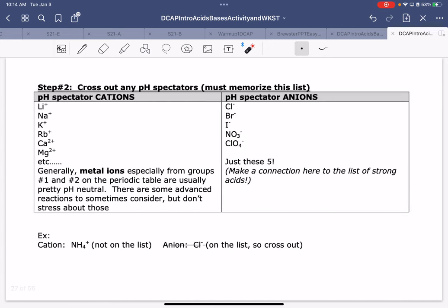Then, step two, I've got to cross out any pH spectators. You are expected to memorize this list. Here's my list of my cations. Here's my list of my anions.